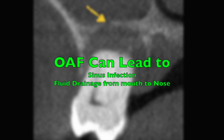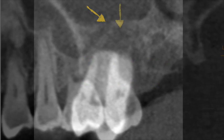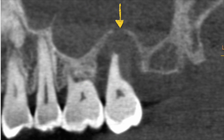Oral-antral fistulas can result in sinus infections as well as fluid drainage from the mouth to the nose. With proper diagnostics — a cone beam CT scan — the surgeon and the patient can properly discuss the likelihood of sinus perforation well in advance and plan for its management prior to the surgery.